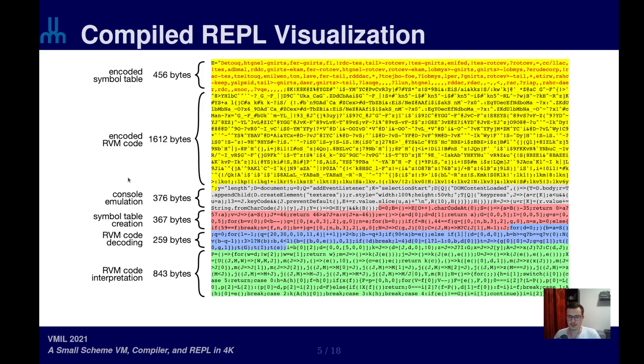You may notice I skipped over a section, which is this one here. The section in gray is the console emulation. And in fact, if you take this whole JavaScript snippet and insert it between two script tags and make a web page out of that, you will find that you have a running virtual machine of Scheme in a REPL in a web page.